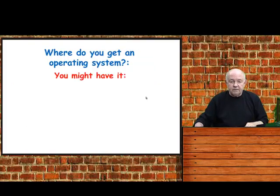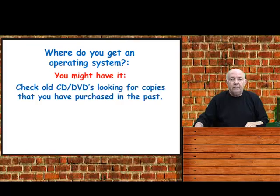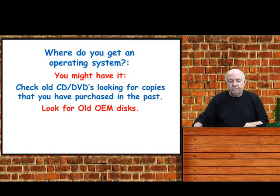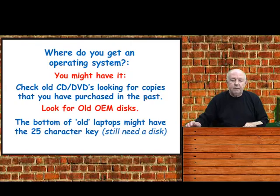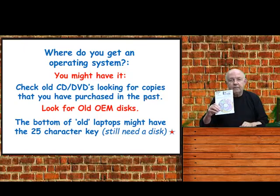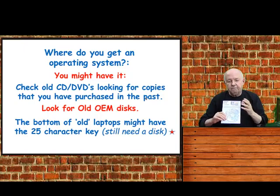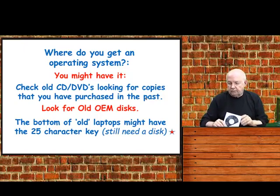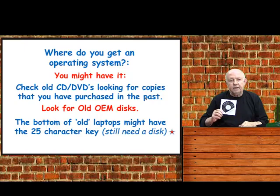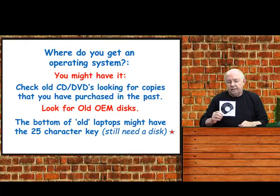Where do you get the operating system? Well, you might have it. What you need to do is go through and check your old CDs and DVDs, looking for past copies that you may have purchased. You want to look for an OEM disk or the bottom of a laptop disk. I went through my software and found an OEM copy — if you can find an OEM version that maybe came with the computer and has the 25-digit code on it, that would really be a great way to start.